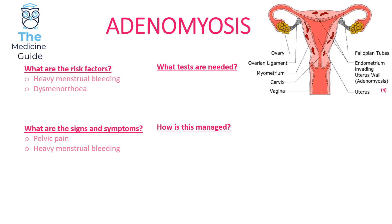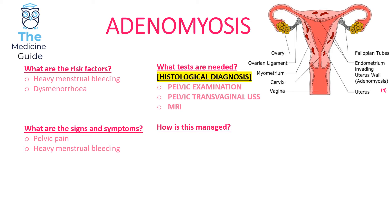Women with adenomyosis will suffer from pelvic pain and heavy menstrual bleeding. In terms of tests, it tends to be a histological diagnosis. Initially you would perform a pelvic examination, then a pelvic transvaginal ultrasound scan, from which you could take a biopsy for histological diagnosis. You could also do an MRI if there is any degree of diagnostic uncertainty.